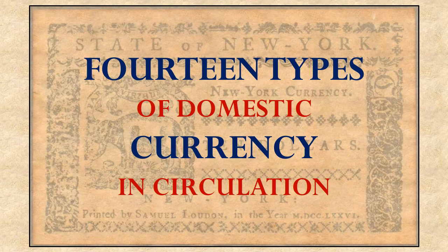The second problem under the Articles of Confederation was that there were 14 different kinds of money in circulation among these new states. The reason there were 14 is that we had 13 brand new little countries, each issuing their own money, and then the Confederation Congress also issued its own kind of money. And beyond that, you had money from England, France, Spain, or other countries also being used.